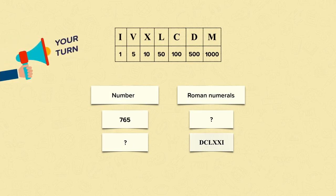Now it's your turn. See if you can work out what 765 is in Roman numerals, and what D, C, C, C, C, C, C, C, C, C, C is as a number. Pause the video and have a go.